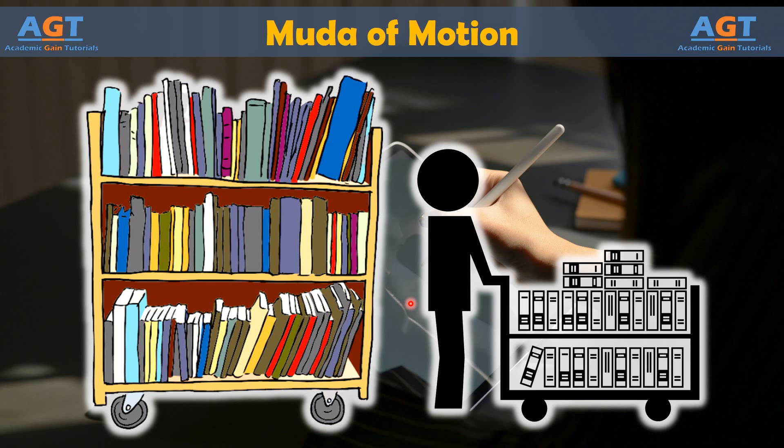If books are placed at random on the cart, the subsequent movement between shelves wastes motion and time. Streamlining company processes eliminates muda of motion, and data must be collected and analyzed to identify unnecessary movement.